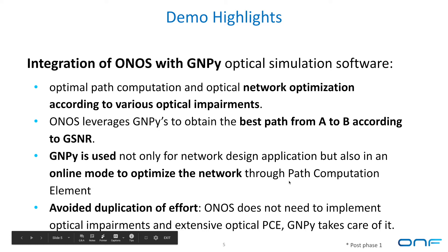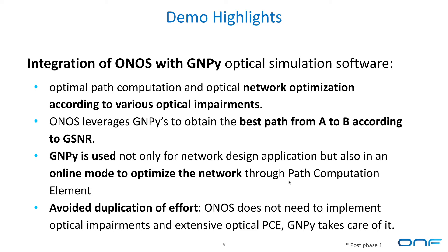The integration between ONOS and GMPY allows optimal path computation in the optical network and optical network optimization according to the various optical impairments that GMPY can take into account. In the demo, ONOS leverages GMPY to obtain the best path from A to B according to the GSNR level computed by GMPY for each of the possible paths. ONOS requests every possible path from A to B from GMPY, GMPY gives back all these possible paths, and ONOS picks the best one according to the highest GSNR value. GMPY is no longer used only as an offline planning and design tool, but is taken online as a path computation element on top of the ONOS SDN controller.